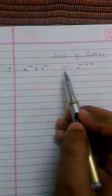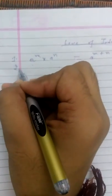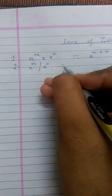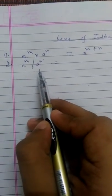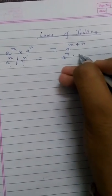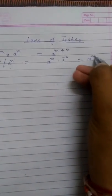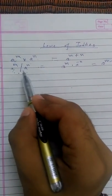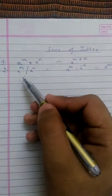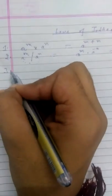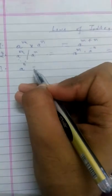When both the bases are the same, the powers are added. The second law is: a to the power m divided by a to the power n. Both the bases are the same, but one is in the numerator and the other is in the denominator, so we write a to the power m minus n.